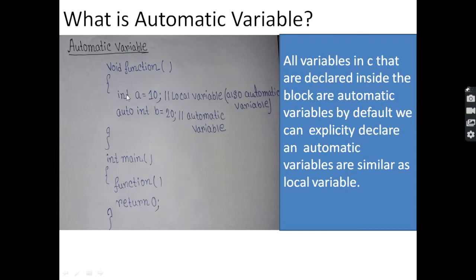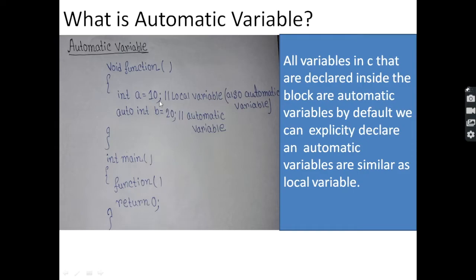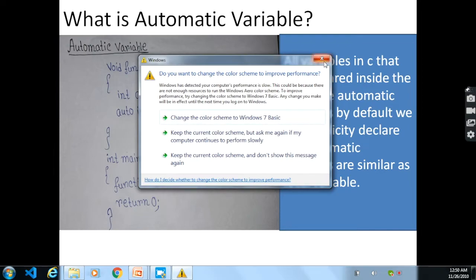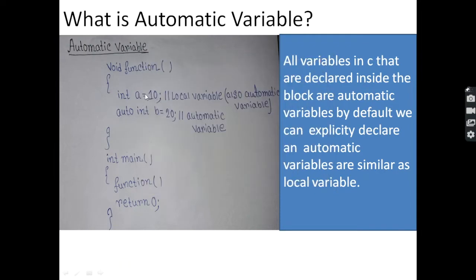We can say all variables declared inside a block are automatic variables. In this program: void function with int a equal to 10 — this is a local variable and also an automatic variable. And auto int b equal to 20 — this is explicitly an automatic variable using the 'auto' keyword. When the function is called, the output is a equal to 10 and b equal to 20. The automatic variable is declared using the 'auto' keyword, which is a reserved word.